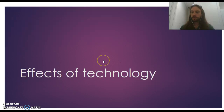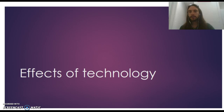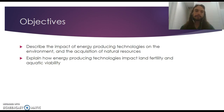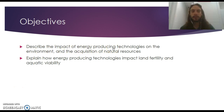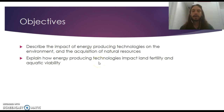This is going to be the last subunit for this large two-unit compilation on natural resources and the human effect. This covers the effects of technology. Our objectives are to describe the impact of energy-producing technologies on the environment and the acquisition of natural resources, and to explain how energy-producing technologies impact land fertility and aquatic viability.